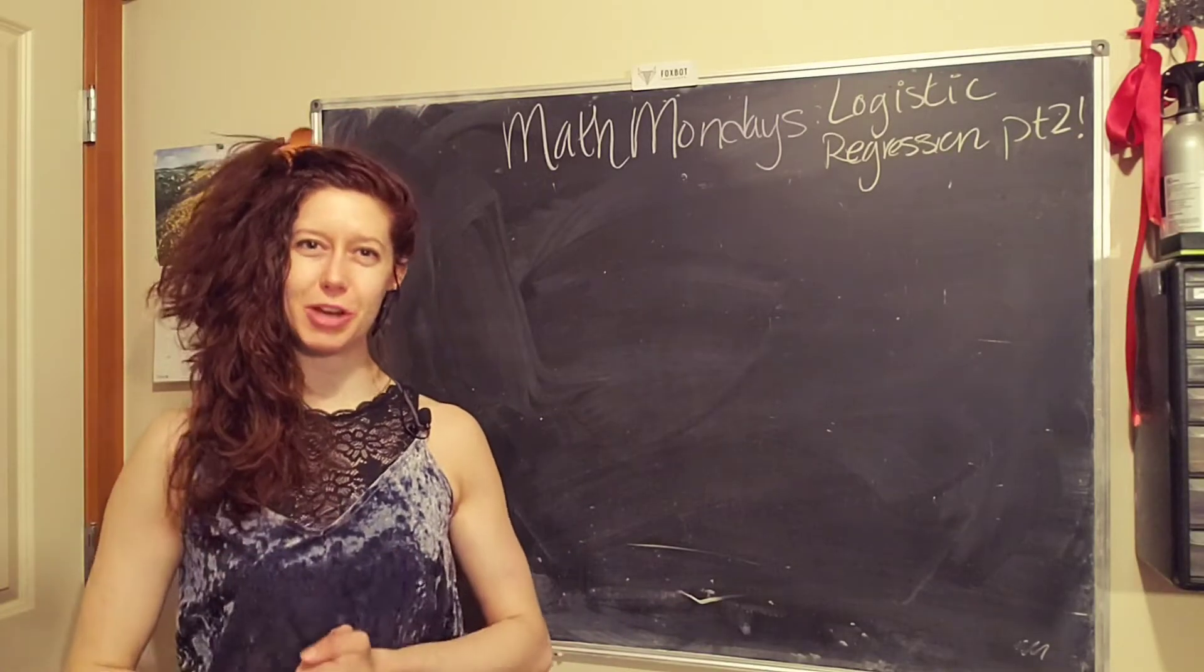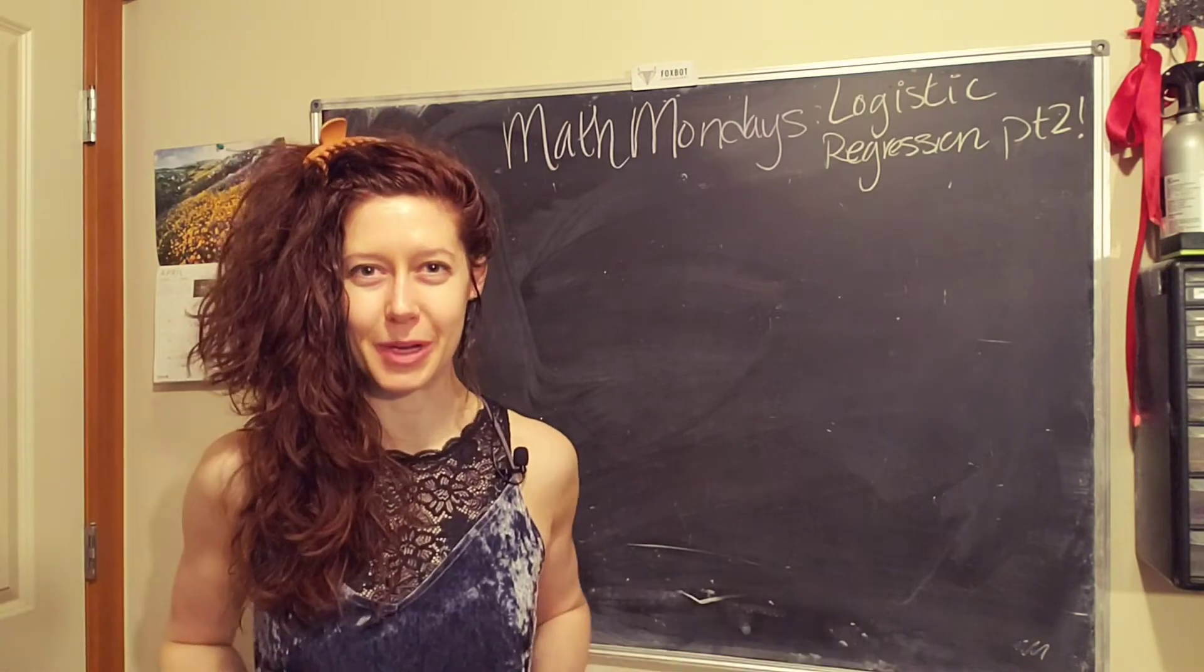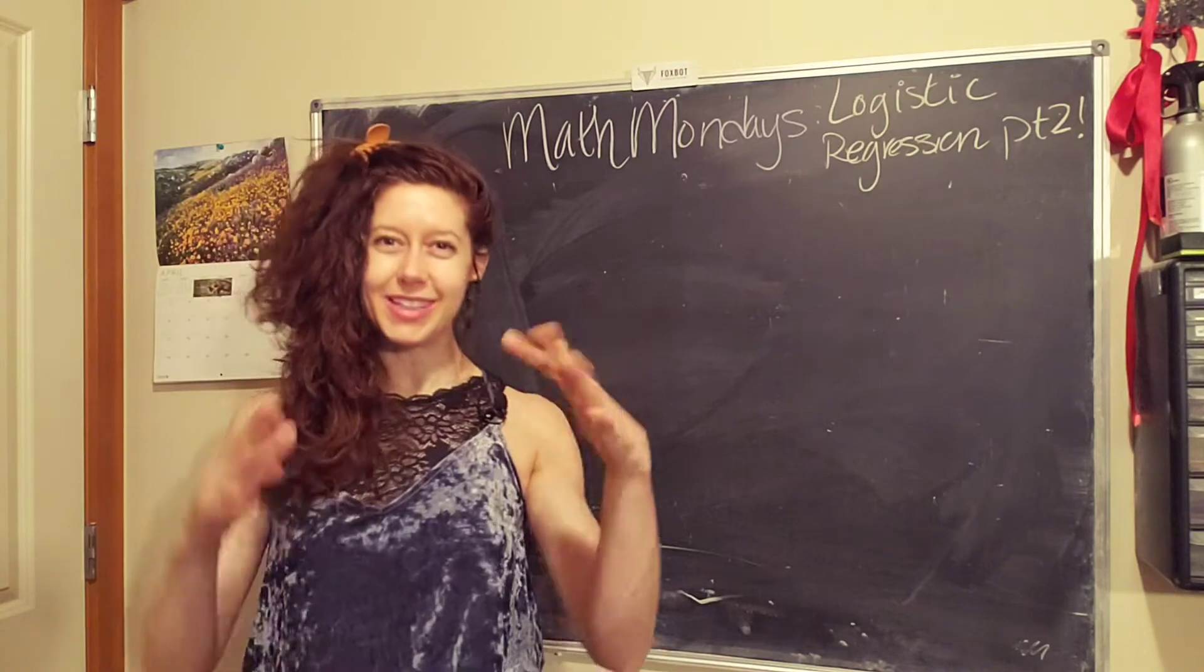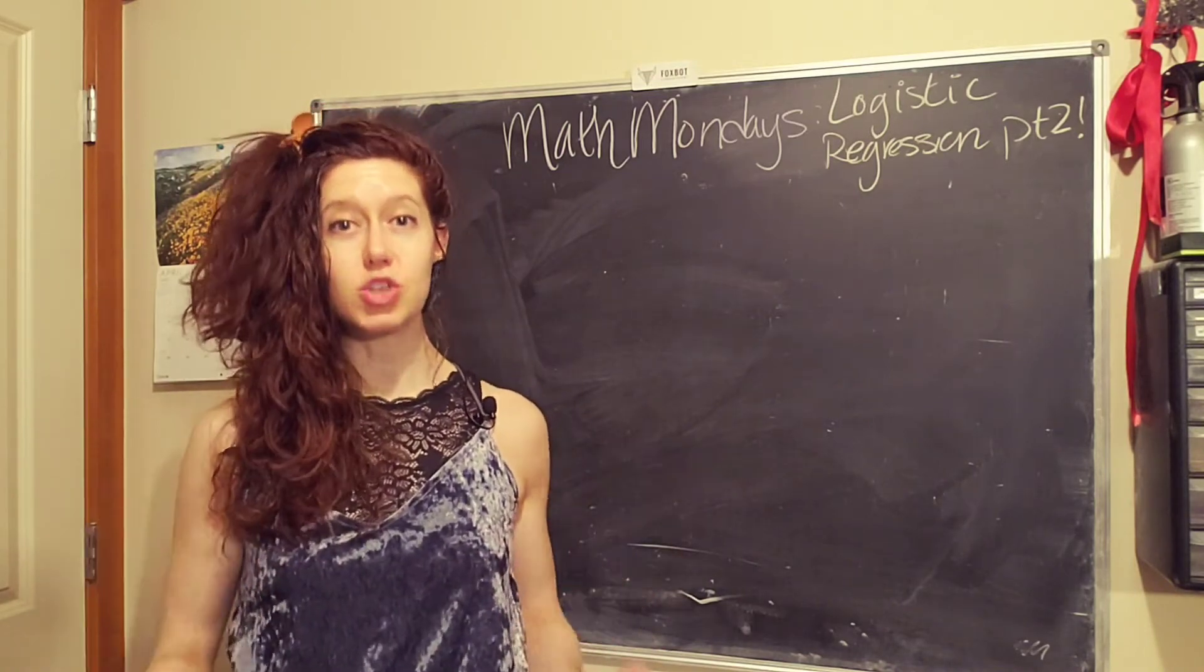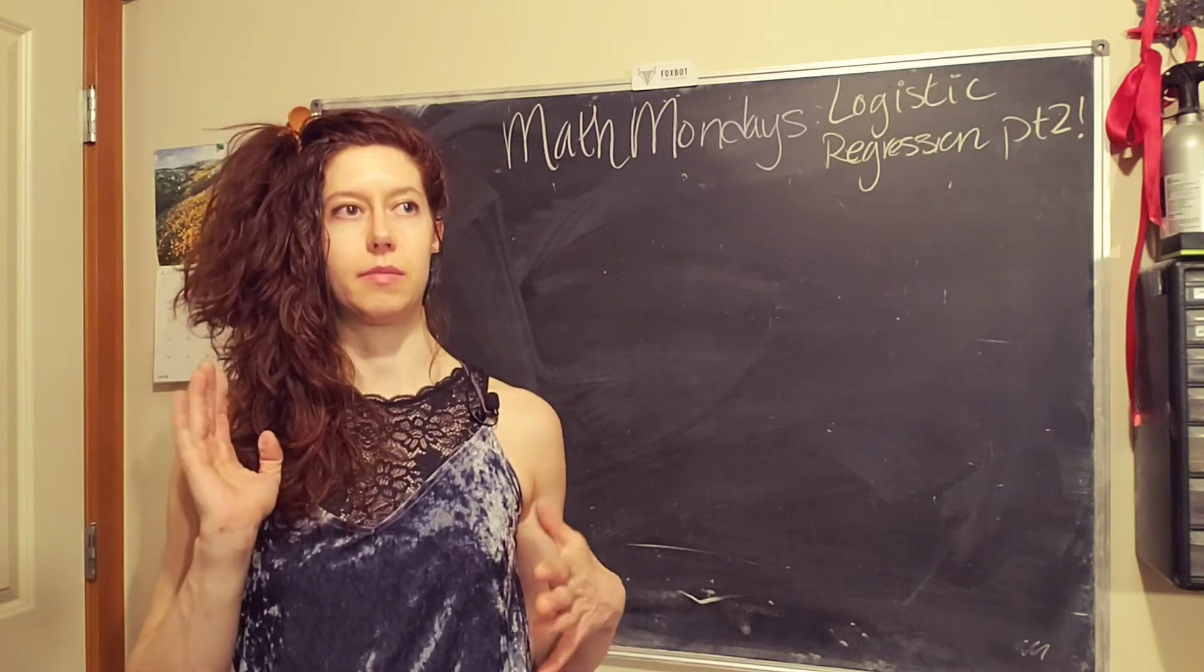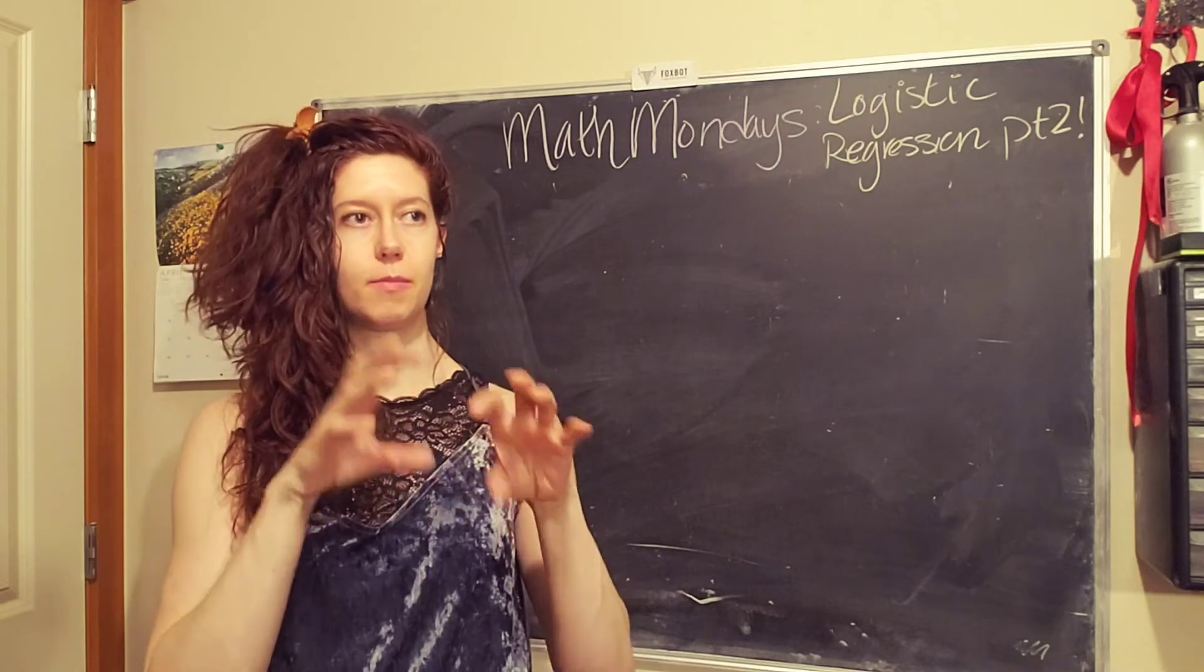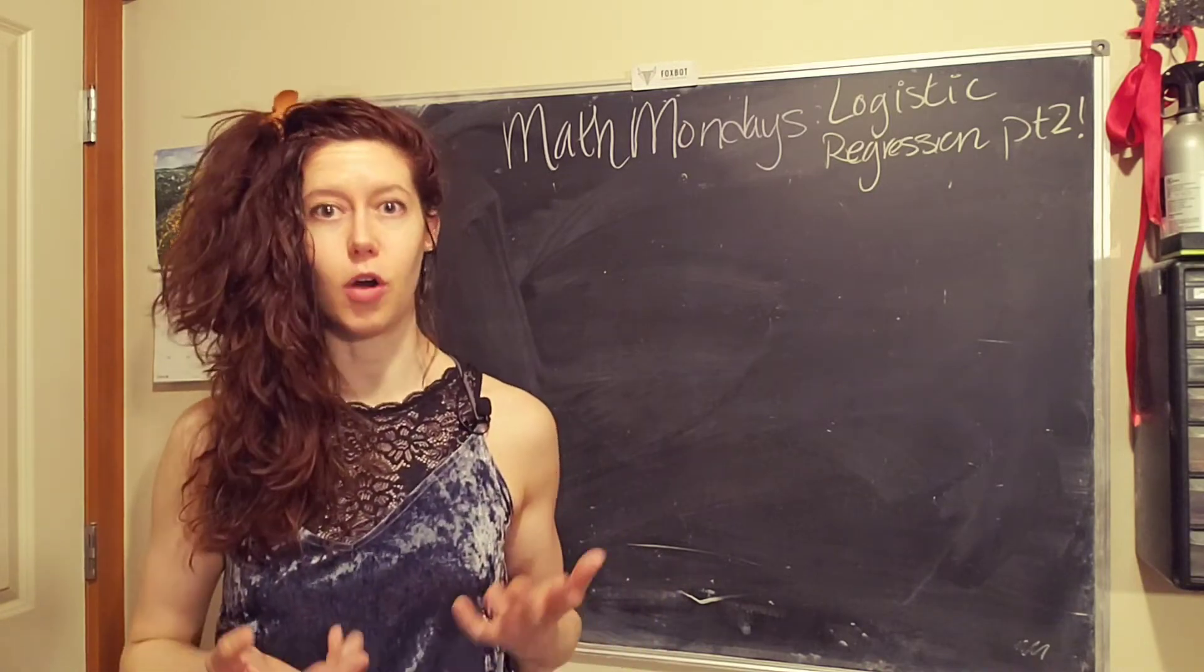Hello, lovely humans! Jen Foxbot here. In this episode of Machine Learning Math Mondays, we are doing Logistic Regression Part 2. In this episode, we are going to talk about decision boundaries, which are basically a mathematical representation of how we segment or separate the different parts of our data set.